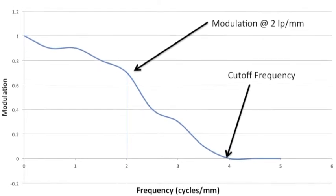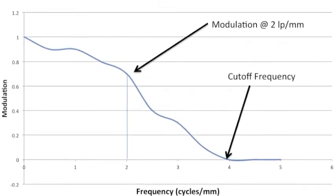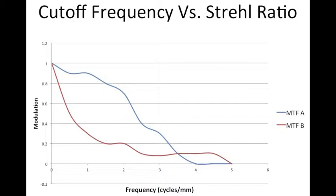Frequencies beyond cutoff frequency of the system do not get transmitted. It's important to note that the cutoff frequency does not fully characterize an imaging system. As in this diagram, MTF A has a shorter cutoff frequency than MTF B. However, MTF A has a much higher strel ratio, which is the integral of the MTF.